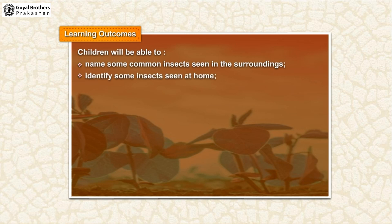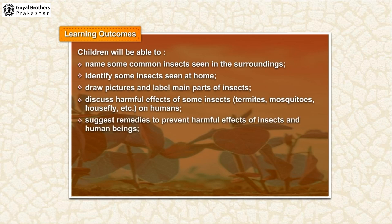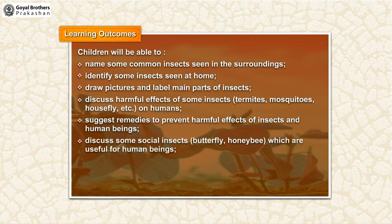Identify some insects seen at home. Draw pictures and label main parts of insects. Discuss harmful effects of some insects — termites, mosquitoes, housefly, etc. — on humans. Suggest remedies to prevent harmful effects of insects on human beings. Discuss some social insects such as butterfly and honeybee.